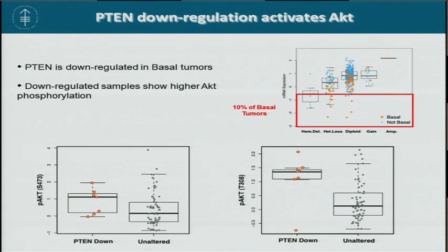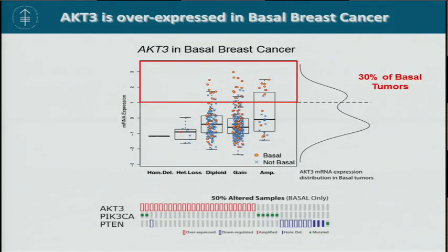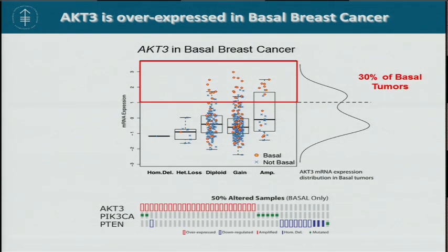PTEN was not the only gene with an aberrant mRNA expression pattern. We found a very interesting pattern for AKT3 expression in basal tumors. AKT3 expression in basal tumors has a strong bimodal distribution, and up to 30% of basal tumors have AKT3 overexpression. Putting these observations together, we now have 50% of basal tumors with alterations in the PI3K-AKT signaling cascade, and AKT3 overexpression is nicely mutually exclusive with PTEN downregulation in these tumors.